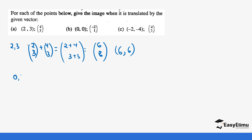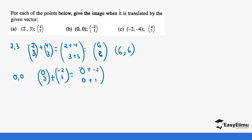For part B, we have the point (0, 0). As a column vector it is (0, 0). We add the translation vector (negative 2, 1): 0 plus negative 2 equals negative 2, and 0 plus 1 equals 1. So the coordinates are (negative 2, 1).